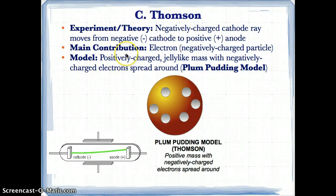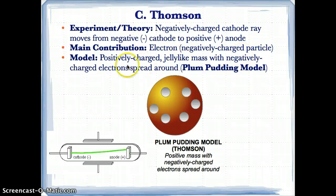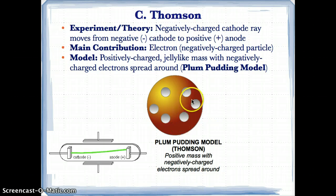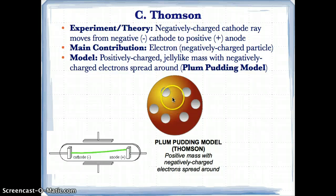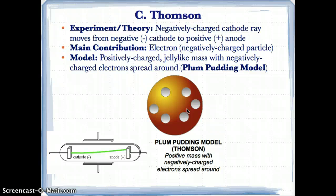Thomson's main contribution was the discovery of the electron — a negatively charged particle within the atom. His model proposed that the atom was not just a sphere, but a positively charged jelly-like mass, represented in orange, with negatively charged electrons spread throughout, represented by the white-gray spheres. He called this the plum pudding model.